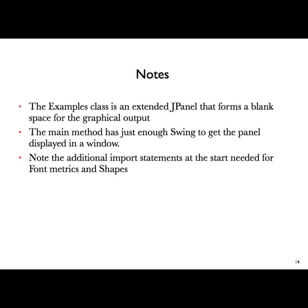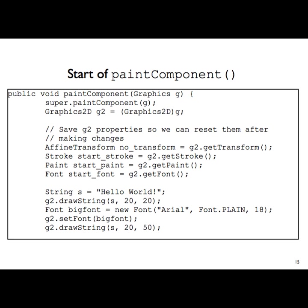Where we're going to draw our graphics is by overriding the paintComponent method. The first thing we have to do — and importantly it is the first — is when you use super to call the constructor from the class above. You need to put this first in the method. That calls back to the superclass JPanel, calling everything needed for the basic JPanel setup. Then we get the graphics object and, for historical reasons, cast it into a Graphics2D object.